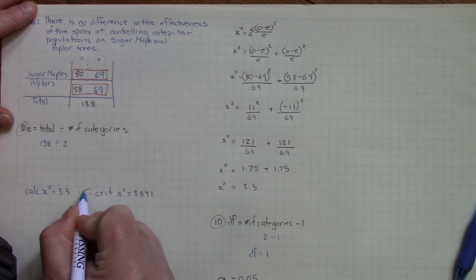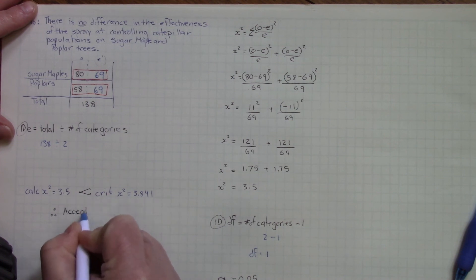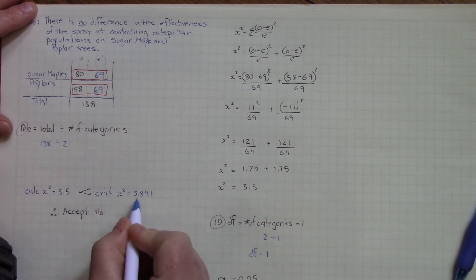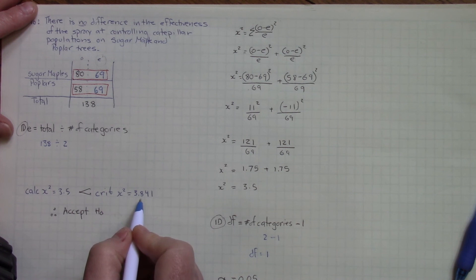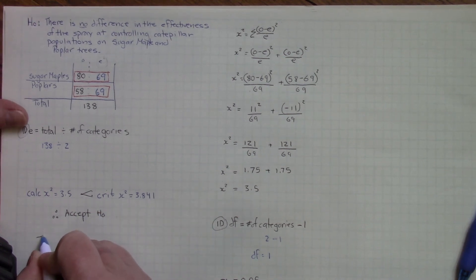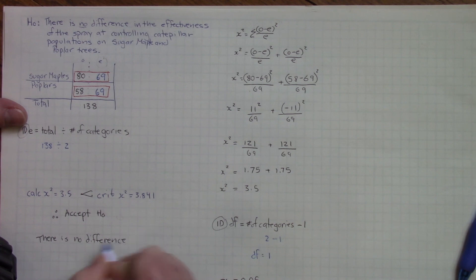Critical chi-squared is greater than calculated chi-squared. Therefore, we accept our null hypothesis. 3.5 is less than 3.841. The calculated chi-square has not crossed that critical threshold. So we accept our null hypothesis, and we write our concluding statement, that there is no difference, because we accepted the null. Basically, your concluding statement is your original null when you accept it.